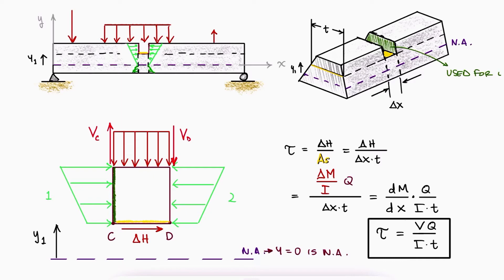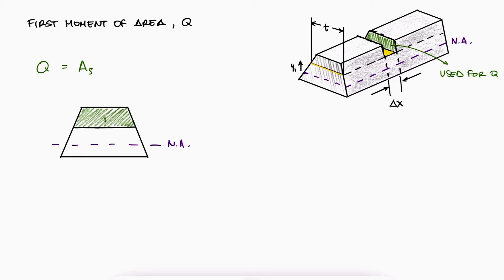The first moment of area q, which we already know is referring to the green shaded area, is in general calculated as the shaded area times the distance from the neutral axis to the centroid of that shaded area. The dimension t, that refers to the thickness of the cross-section area for the horizontal plane for which we're trying to find the shearing stress, is always a dimension that is perpendicular to the internal shear force v.